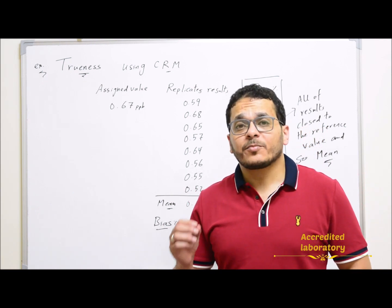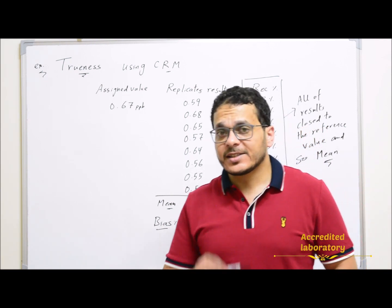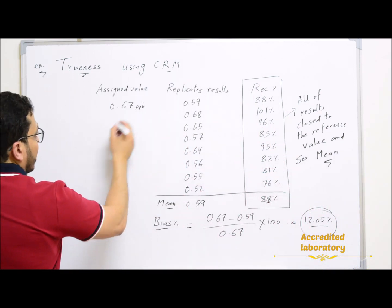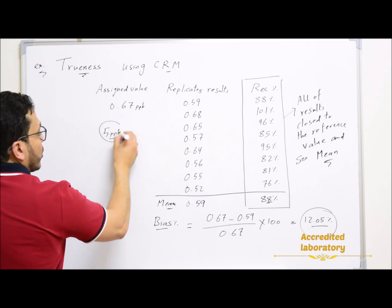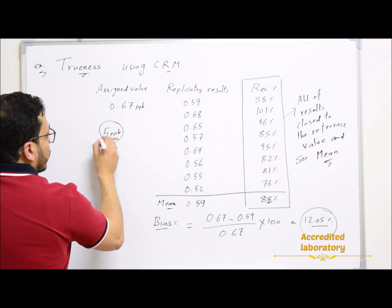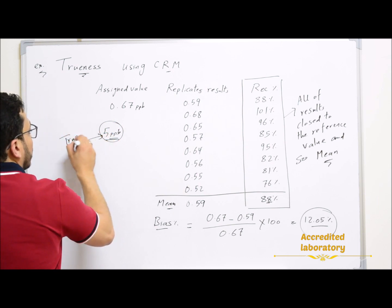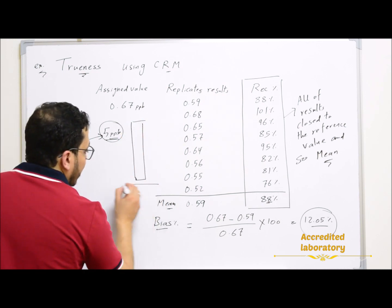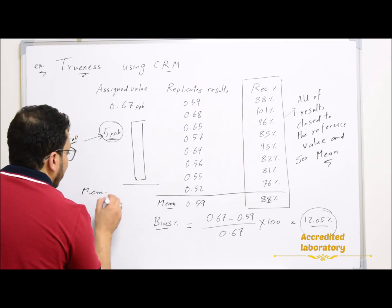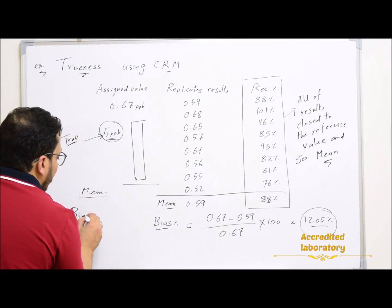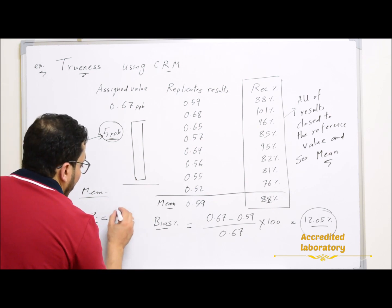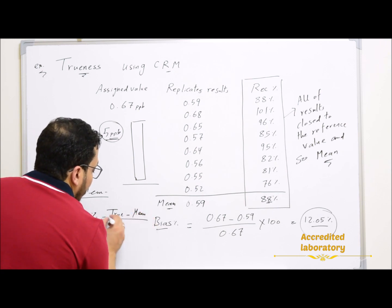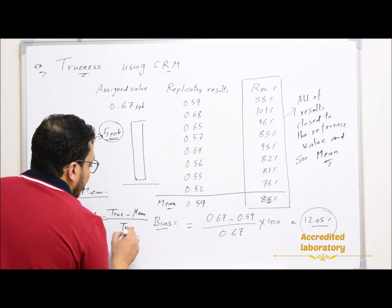But what do you do if you don't have a PT or CRM for your target analytes? In that case, you can spike your sample with a known concentration — for example, 5 ppb — and this becomes your true value. You then make replicates from this spiked sample, calculate the mean, and calculate the bias percentage: (true value − mean) ÷ true value × 100.